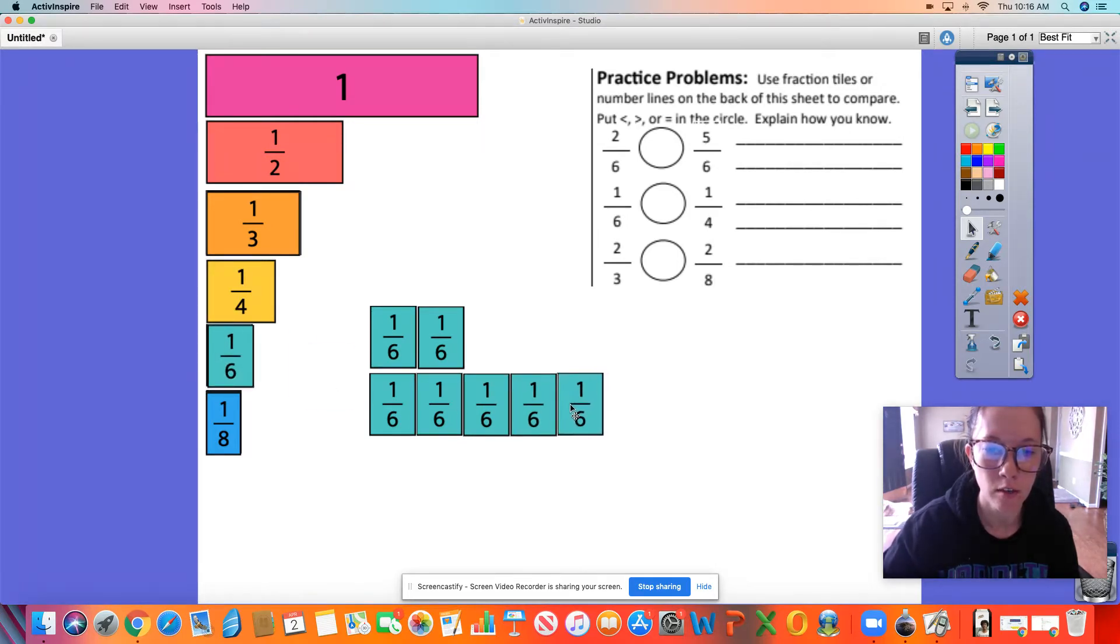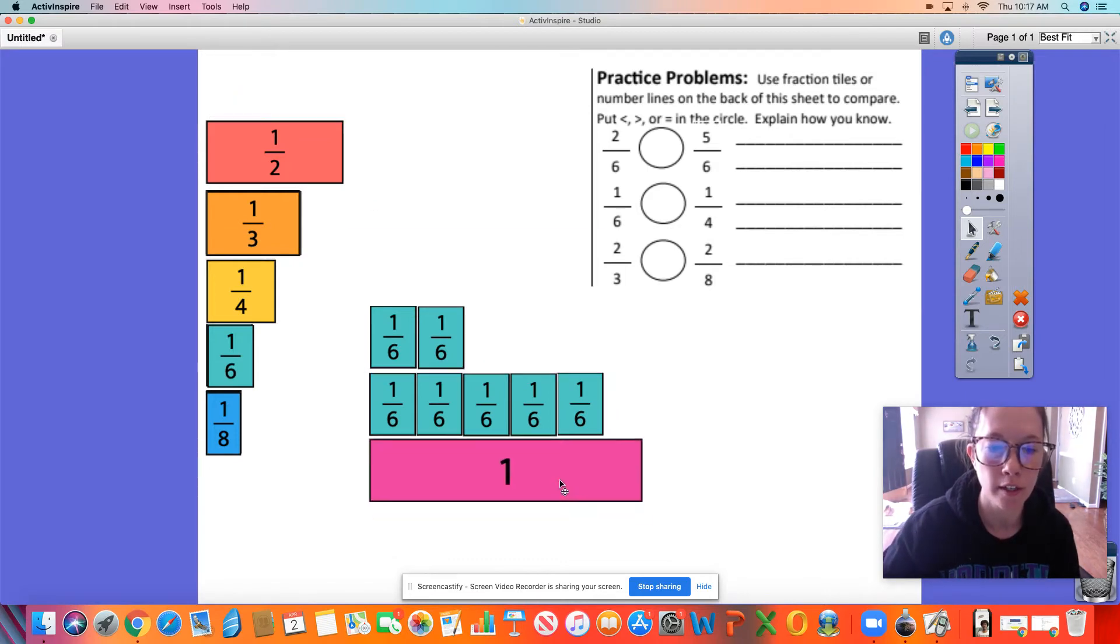And after I've gotten it out, I can see which one is greater, and again, greater means it's closer to that one whole. There's more there, and I can see that 5 out of 6 is greater than 2 out of 6, so on my paper I would write the less than sign, and that would read 2/6 is less than 5/6.